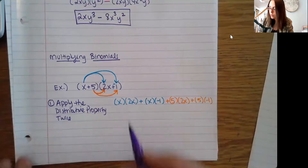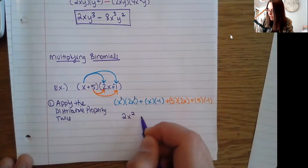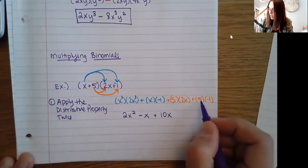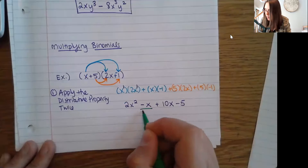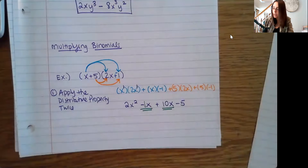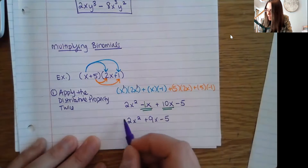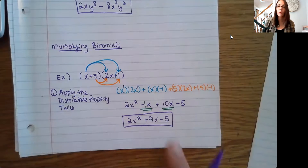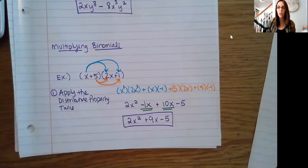Now we simplify. Here I have x to the first and x to the first, giving me 2x squared. This is just negative 1x, so I'll write that as negative x. Here I have positive 10x, and 5 times negative 1 is negative 5. When multiplying binomials like this, you usually do have like terms — notice I have negative 1x and positive 10x which can be added together. So I have 2x squared, negative 1 plus 10 is positive 9x, minus 5. Be careful: once you go back to adding or subtracting, you don't change the variable — we only add exponents when multiplying, not when adding. A common mistake is writing 9x squared by accident, so just be careful there.